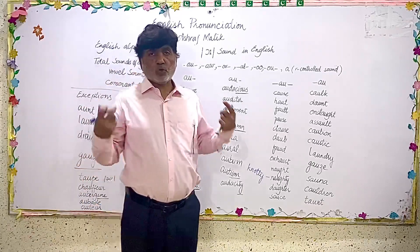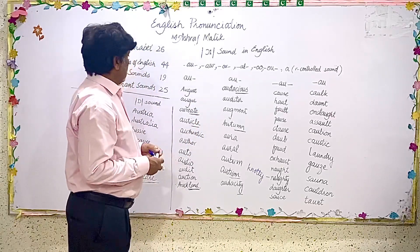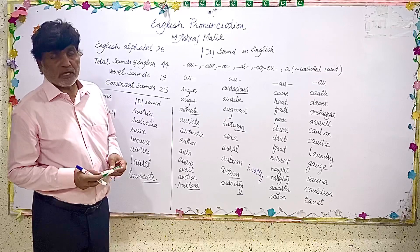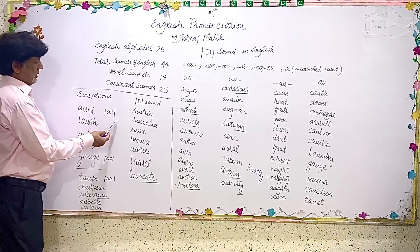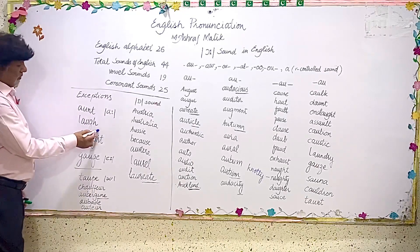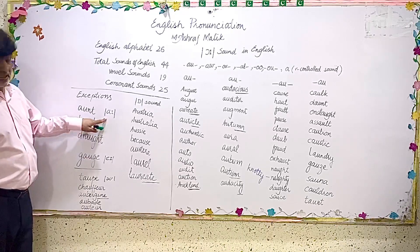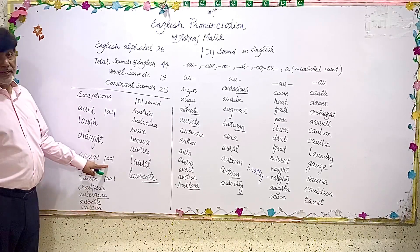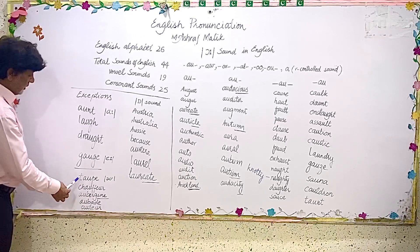There are numerous, countless words which have AU in their spellings, and there are very few exceptions to this rule when AU letters come together but are pronounced differently. For example, the word 'art' — here AU is giving us the sound 'ah.' 'Love' — again AU is giving us the sound 'ah.' 'Draft' — again it is giving us the sound 'ah.' 'Gauge' — here AU is giving us the sound 'a.' And here we have the sound from the same combination AU, as in 'tau.'